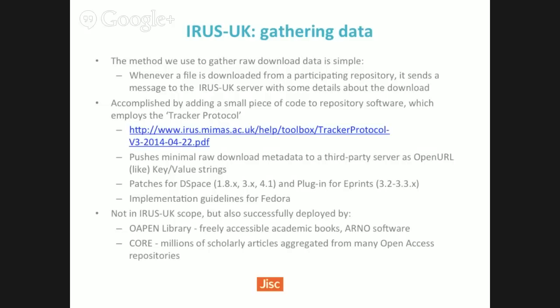It's a push model versus a pull model. Some places in Europe have gone for a pull model where they harvest information, but that puts the onus on institutional repositories to process the stats themselves — and that's a blocker. IRIS is minimal and very lightweight. It works for E-Prints, D-Space, and there's a specification for Fedora. It's also been used for e-books in R&O software and demonstrated for Core, which is an aggregator.